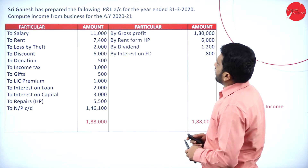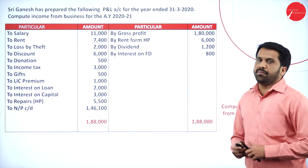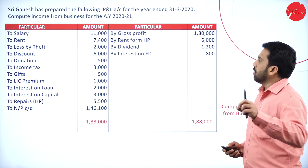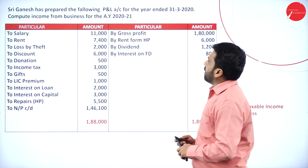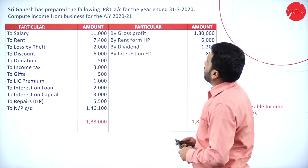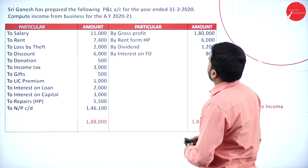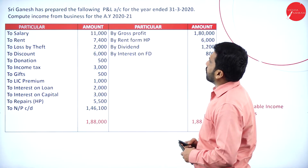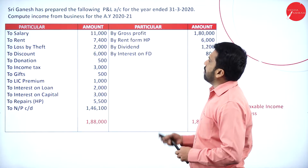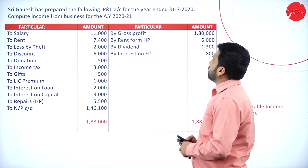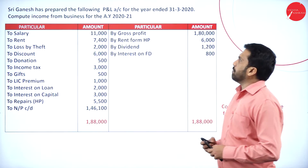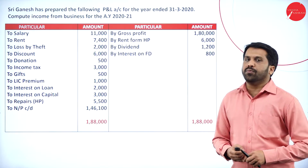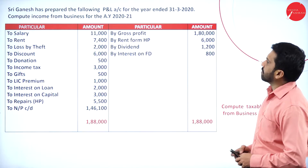The information available requires you to solve a problem. Sri Ganesh has prepared the following P&L for the year ended 31st March 2020. Compute income from business for the assessment year 2020–21.